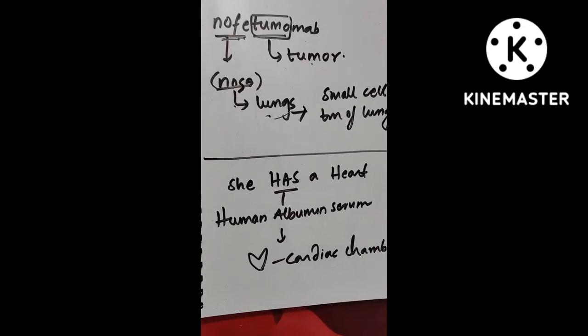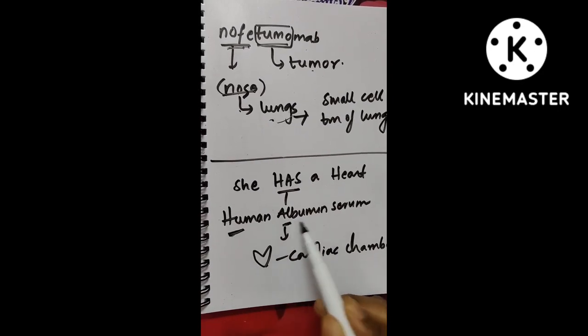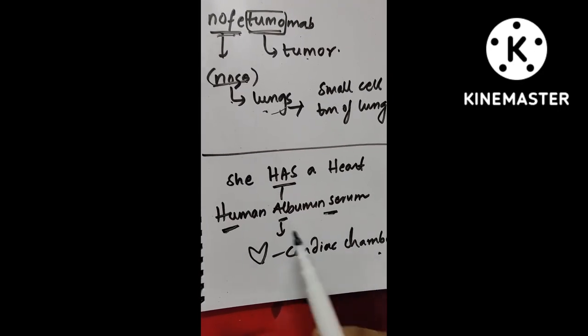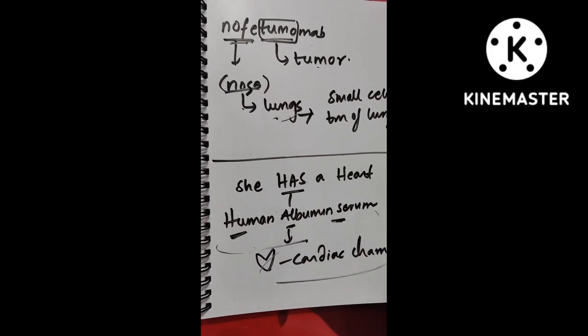Now next one is she has a heart. So HAS is human albumin serum. Heart is cardiac chamber. So human albumin serum is used for cardiac chambers.